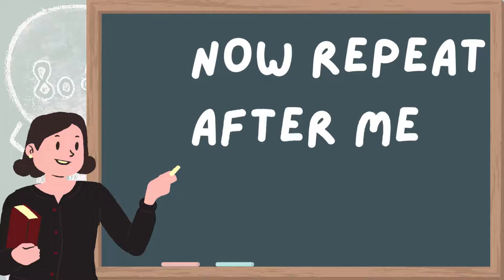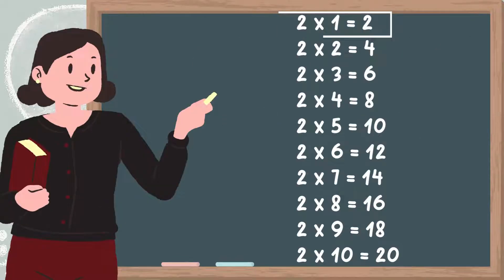Now repeat after me. Two ones are two, two twos are four, two threes are six, two fours are eight, two fives are ten.